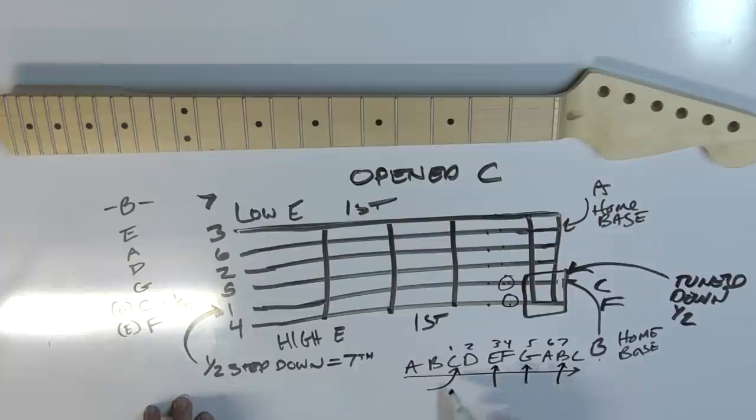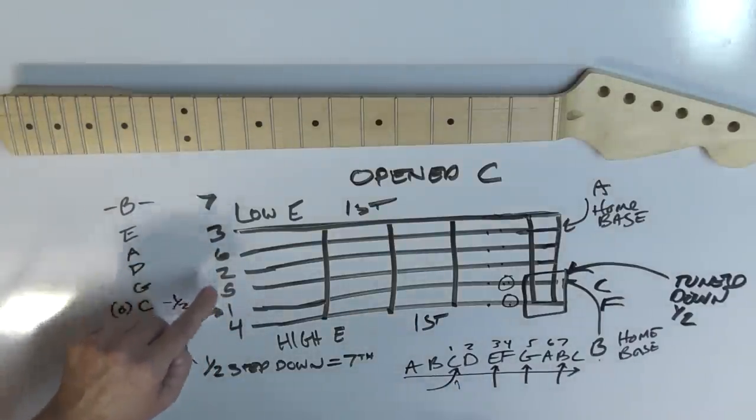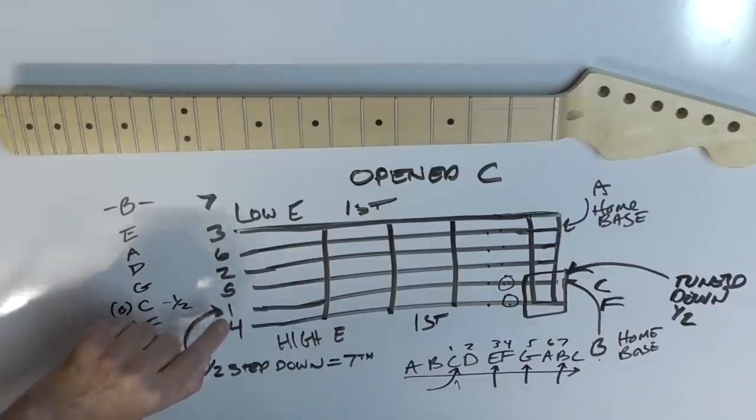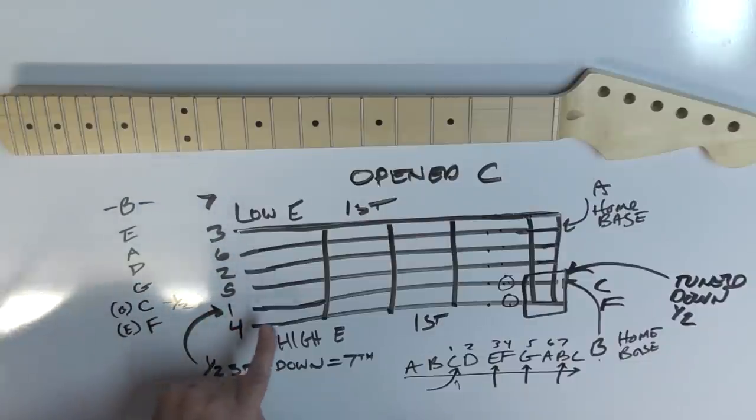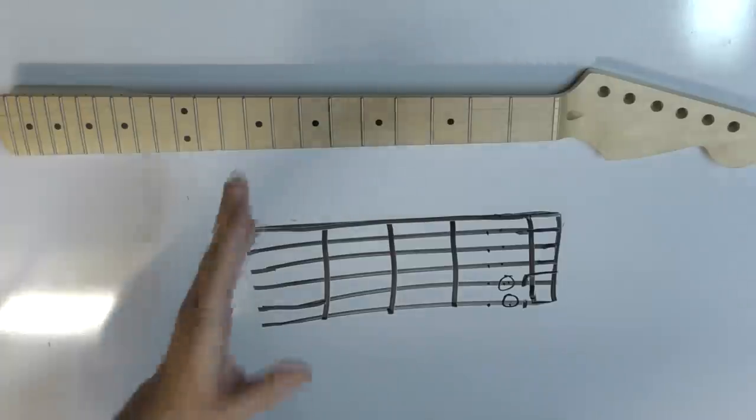So when you're making your chords, they're going to say you want to use the one, three, five. Well, right here, one, three, five. One, three, five. And what we're doing is just one, two, three, four, five, six, seven, or half a step down for the seven.